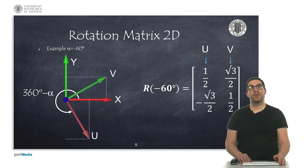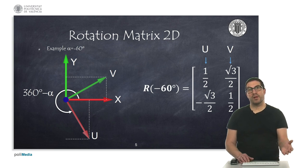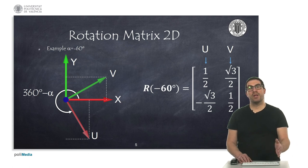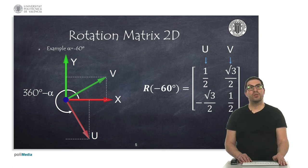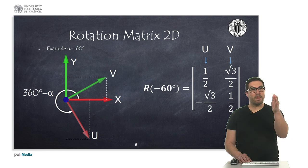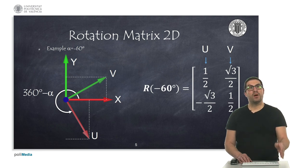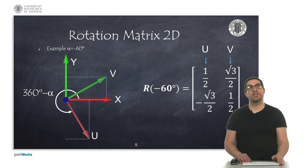In this second example, we rotate minus 60 degrees clockwise. In this case, we get different coordinates for vectors u and v. We can easily check that each of the coordinates we get correspond indeed to the ones that we can see in the figure. For instance, the u vector has a negative value on the y-projection, which means it is actually pointing backwards, as you can see.